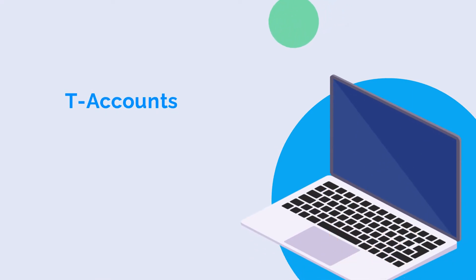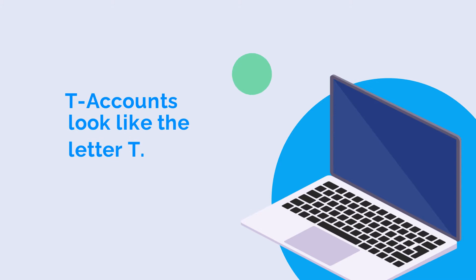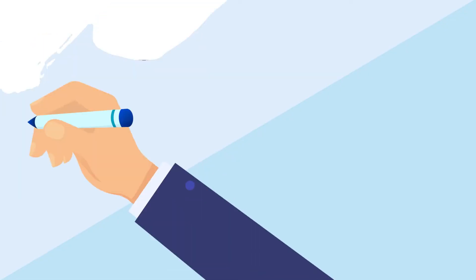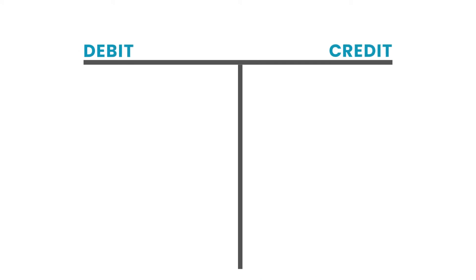T-accounts are given their name because that's exactly what they look like — the letter T. To create a T-account, you need to draw a big T on a piece of paper and label the left side debit and the right side credit. Then, you name the T-account after one of the general ledger accounts you're going to use for the transaction in question.